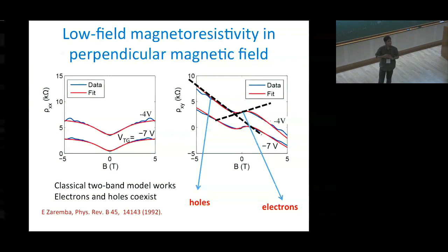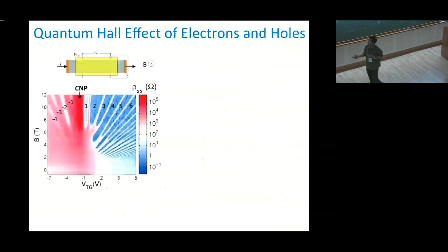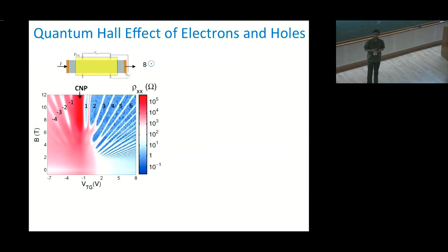We have also done temperature dependence measurements and parallel magnetic field measurements to show that there is indeed a hybridization gap. What I am going to focus on is what happens at high magnetic field. In perpendicular magnetic field, the system can form Landau levels. Since there are two kinds of carriers, it forms both electron Landau levels and hole Landau levels.